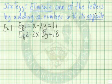Let's look at a first example. Equation 1: x minus 2y equals 11. Equation 2: 2x minus 3y equals 18. We would like to add these two equations together, but as they are, nothing will cancel out.